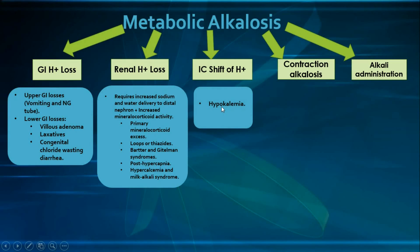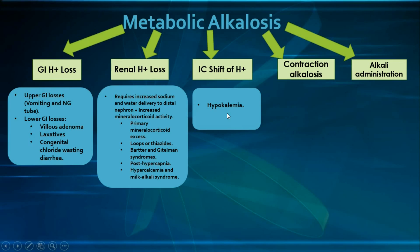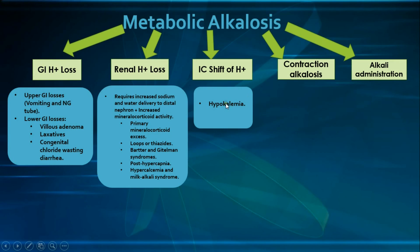The intracellular shift of hydrogen ions is seen in hypokalemia, such as in vomiting, NG tube use, or mineralocorticoid excess. Hypokalemia causes hydrogen ions to shift into cells in exchange for potassium ions moving out to maintain electroneutrality. This intracellular acidosis in renal tubular cells causes hydrogen ion secretion into the tubular lumen, leading to bicarbonate reabsorption into the blood and thereby maintaining metabolic alkalosis.